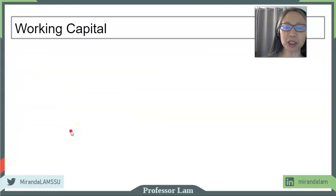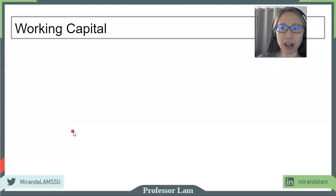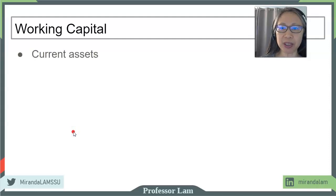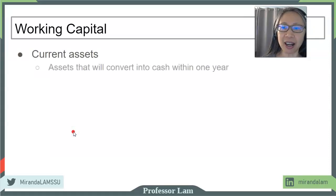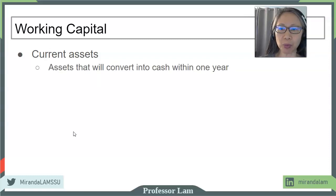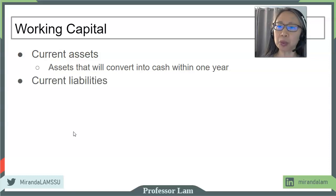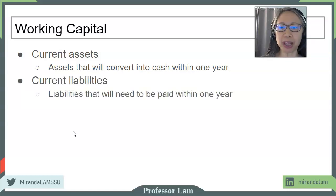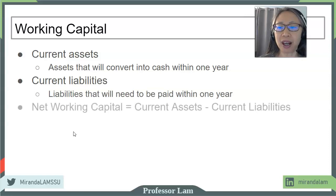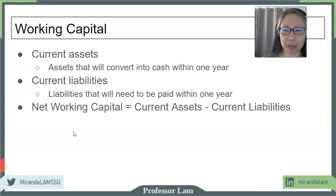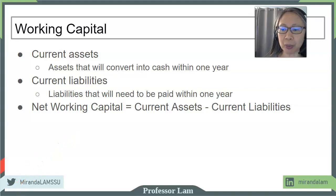A few definitions. Working capital is the amount of asset that you put into work on a short term basis. That includes current assets, which are assets that will get converted into cash within one year, and also current liabilities, which are debt that the company has to pay within one year. Net working capital is defined as current assets minus current liabilities, and this definition is going to come in handy throughout this and the following chapters.